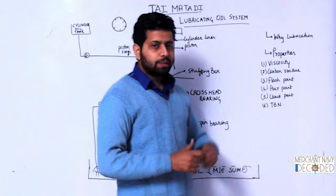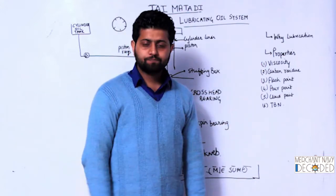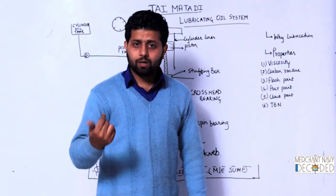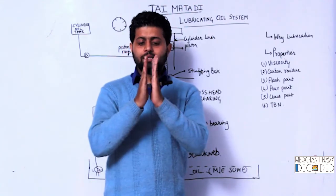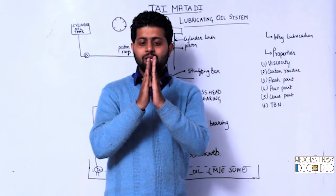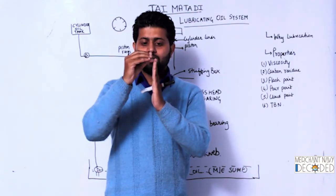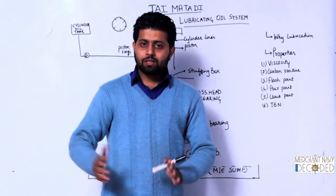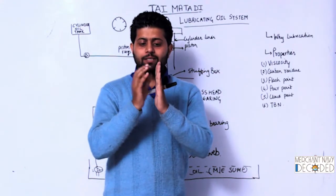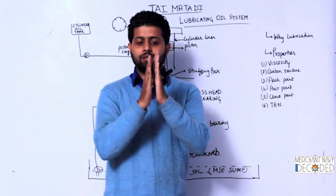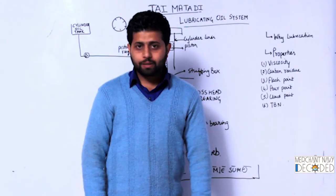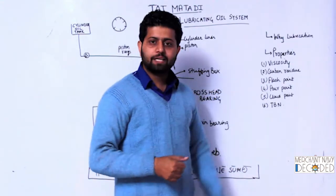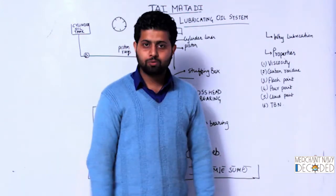Some of the properties I am going to discuss about lubrication: the first one is viscosity. Viscosity is resistance to flow. When there are two surfaces and the clearance between them is very small, and the oil is too thick, it will not flow in between — so there will be no lubrication. If the clearance is large and the oil is very thin, it flows right through — again, no lubrication. So viscosity plays a very important role in lubrication.